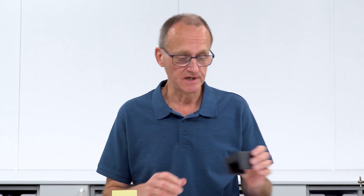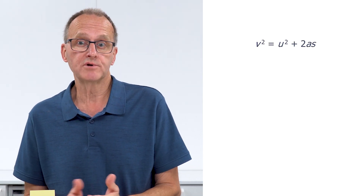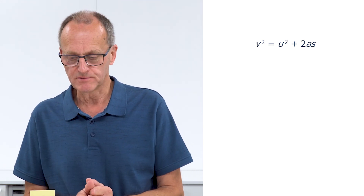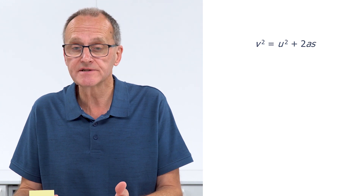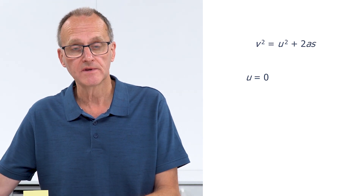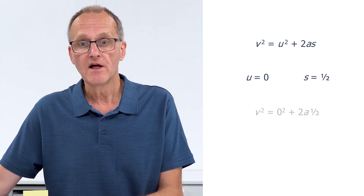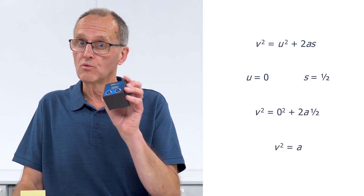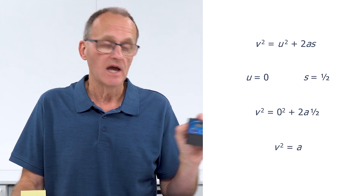If you can't measure acceleration directly but you can measure velocity — for example using a small light gate — it's still possible to get a measure of acceleration quite easily. Using the equation v² = u² + 2as: if we start with the trolley at rest so u = 0, and measure its velocity after it has travelled half a metre so s = 0.5, the equation reduces to v² = a. So we take one velocity reading, square it, and that gives us the acceleration.